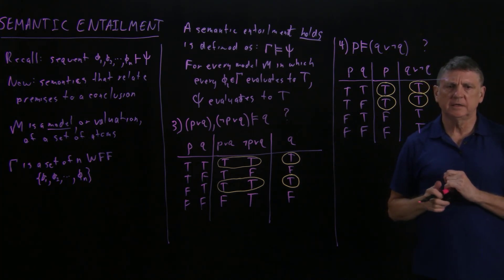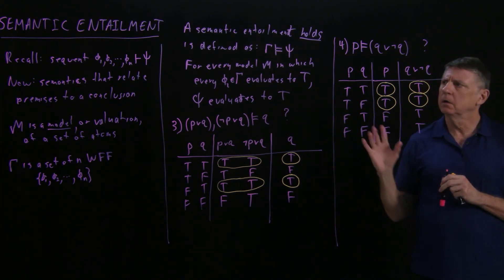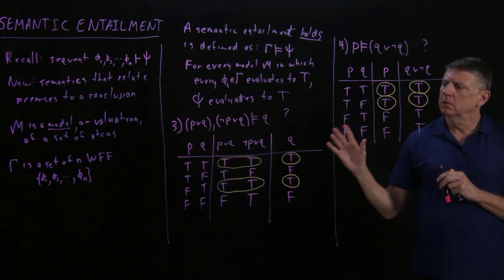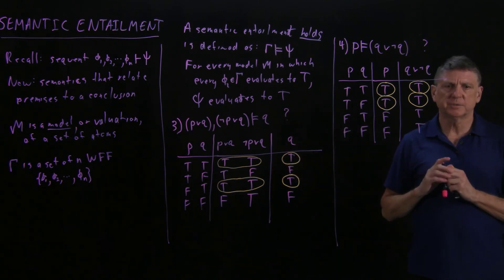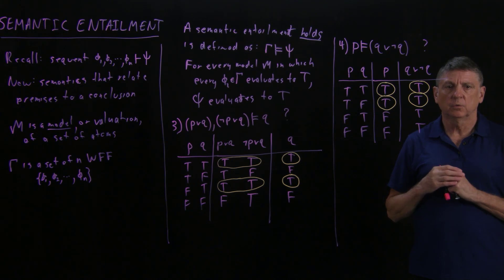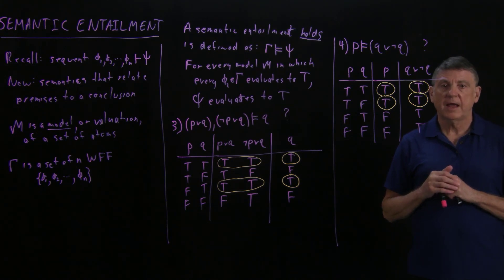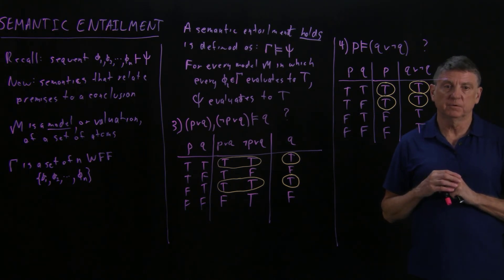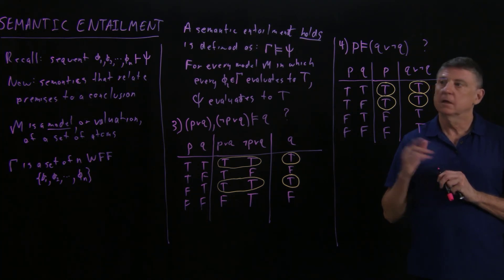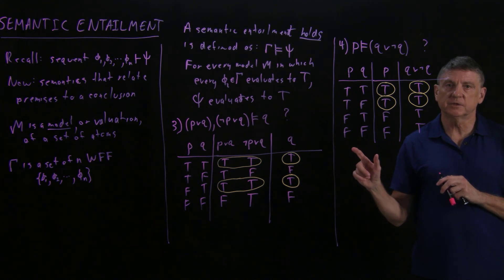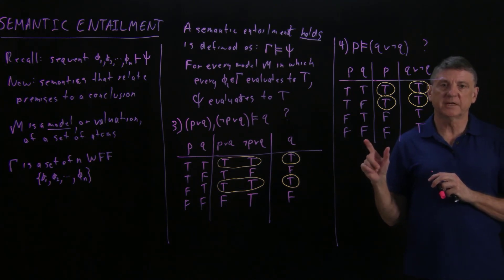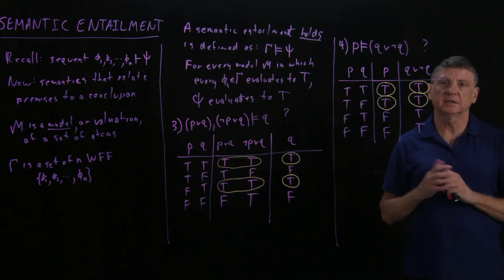What we've seen in these examples are all of the cases in which the semantic entailment holds, we could find a proof; and all of the cases in which we could find a proof, the semantic entailment holds. In subsequent sessions we're going to explore these relationships a little deeper.